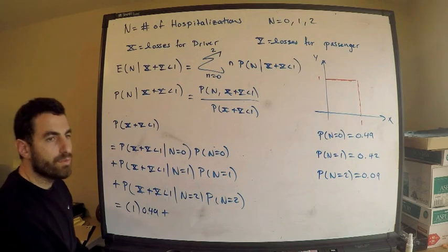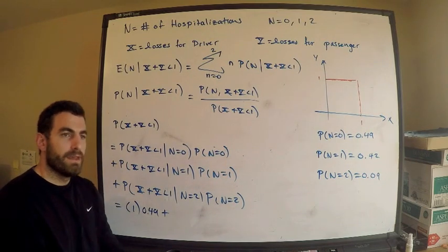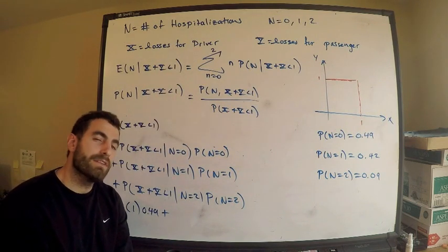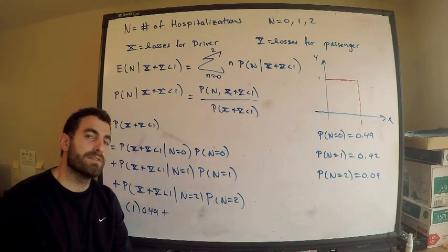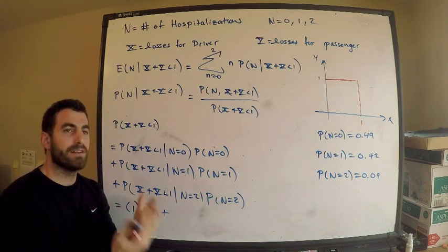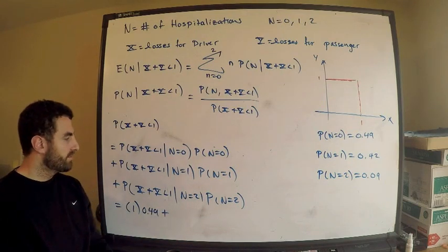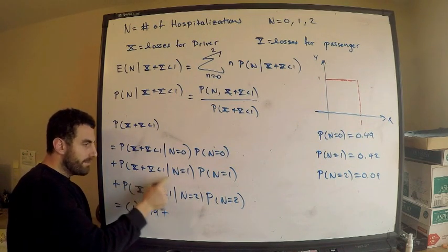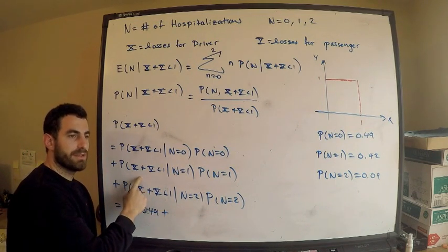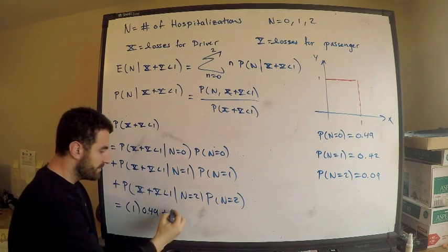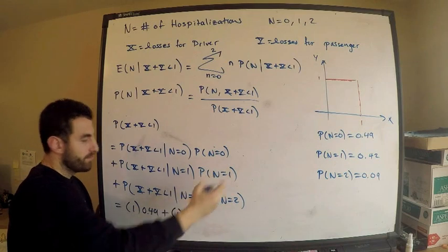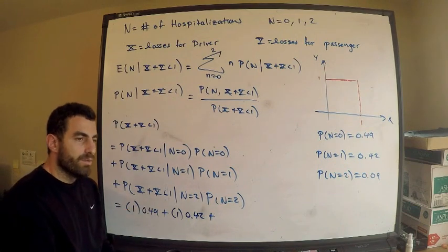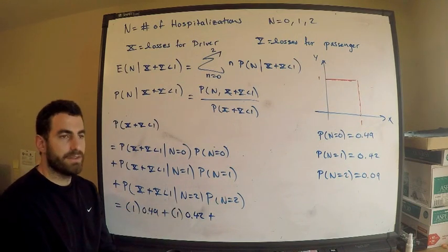If n is 1, only one person is hospitalized — either we experience a loss for the driver or a loss for the passenger. But both individual losses are less than 1 by what's given. So if only one of them happens, that loss is less than 1. So this probability is 1. Probability N equals 1 is 0.42.